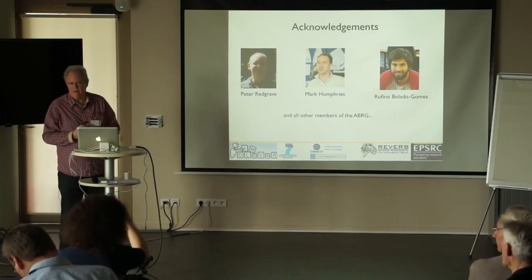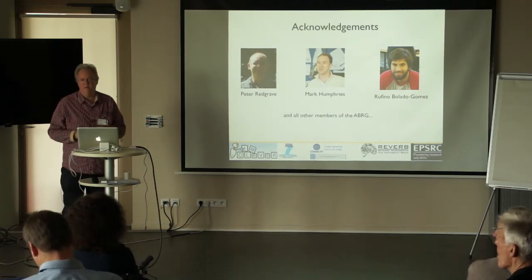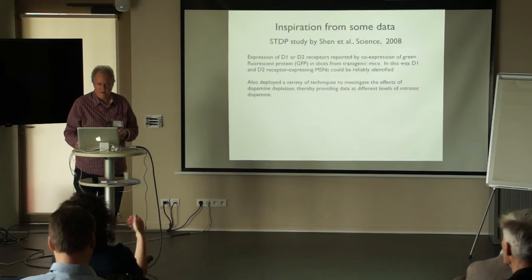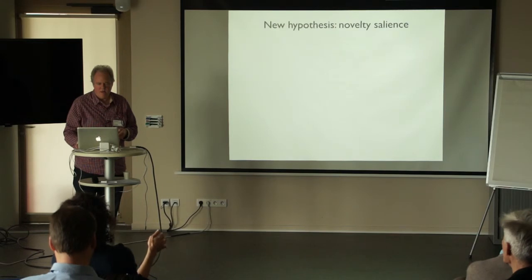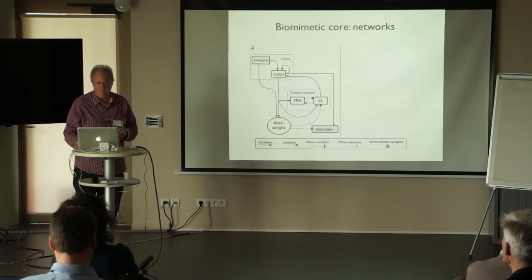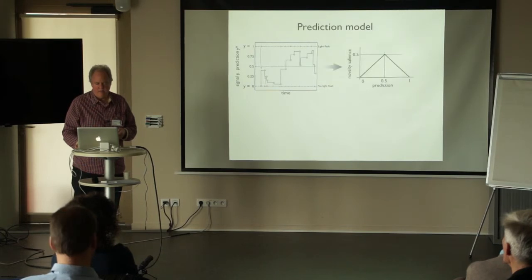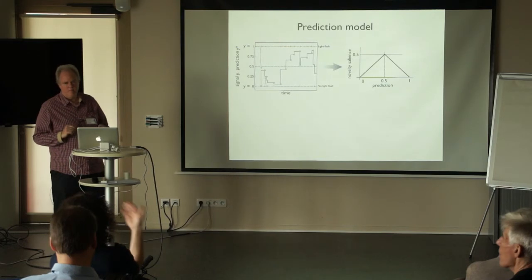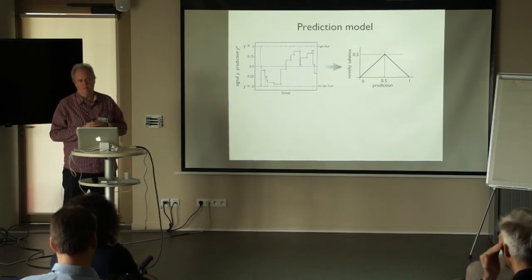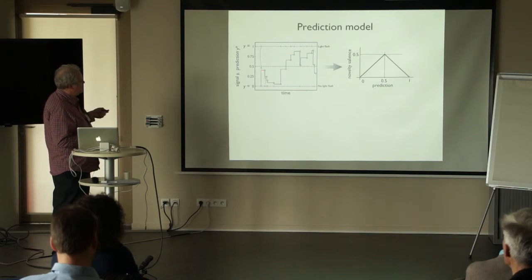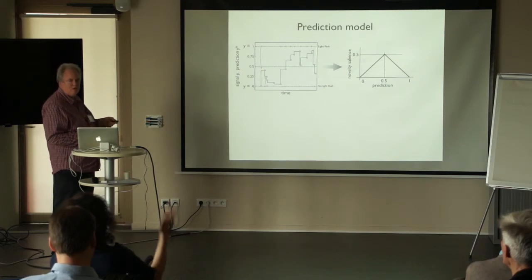I was wondering about the shape of the novelty salience function — the fact that it peaks at 50%. I might have drawn a priori that salience is a declining function. Well, there is evidence from the oddball paradigm — rare events are salient. I would have thought it would be great. Here's a rare event: we had one light flash, and that was enough to cause an increase of novelty salience to nearly 0.5. But it's actually more salient than if its probability goes up, the salience will go down.